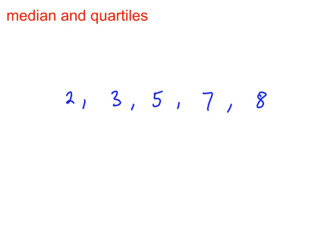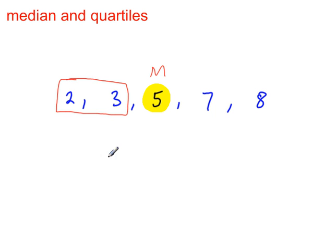Example 2. The middle number is 5, so that's the median. Look at the lower half of the data — the middle number there is 2.5. That's the lower quartile.